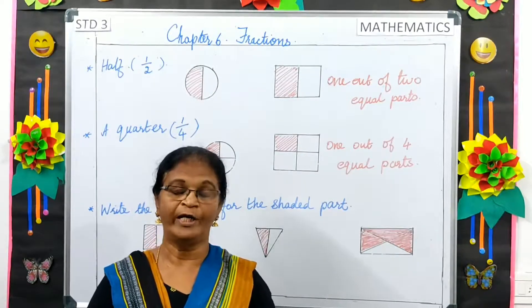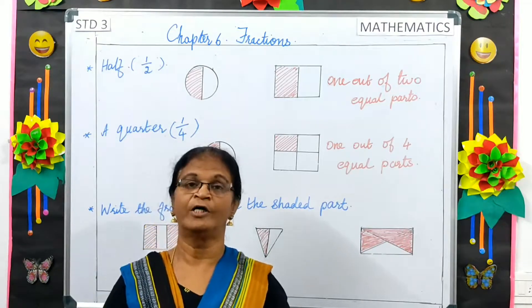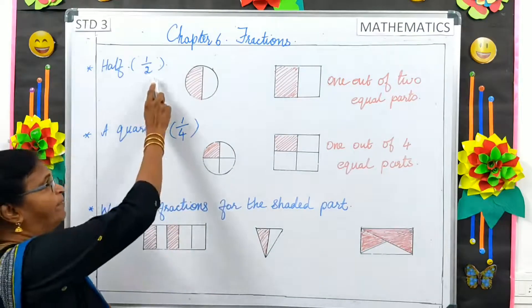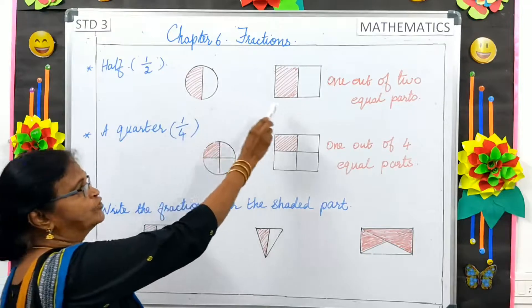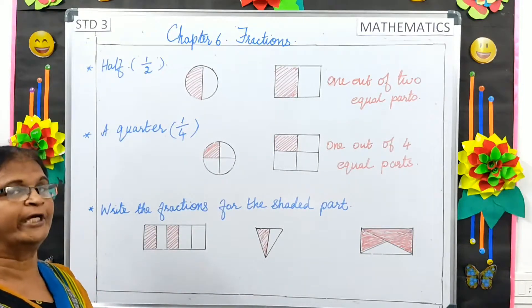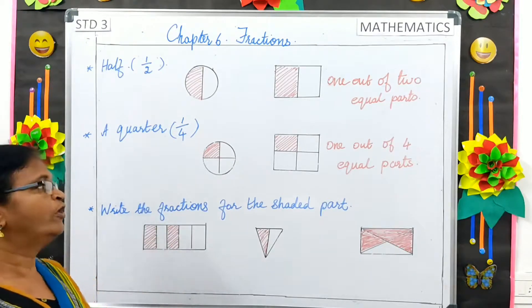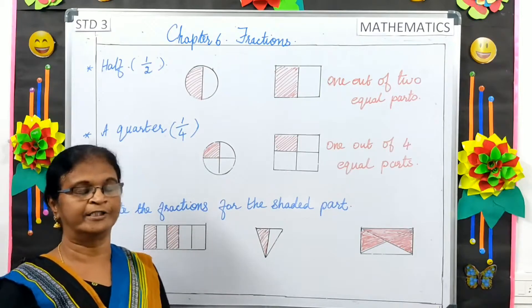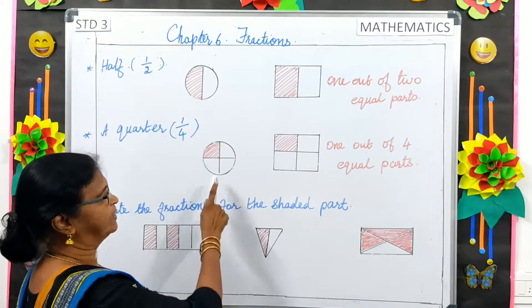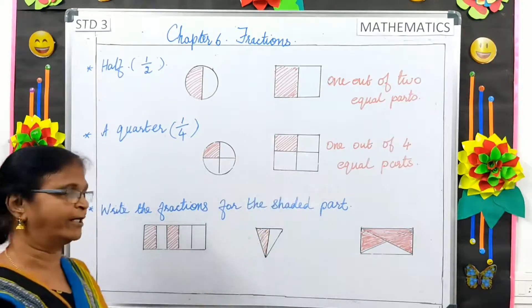When a whole is divided into 2 equal parts, each part is called 1 half of the whole. That means 1 by 2. Here, I have shown you 2 examples. 1 out of 2 equal parts. A quarter or 1 by 4. When a whole is divided into 4 equal parts, we say that is 1 by 4. That is 1 out of 4 equal parts.